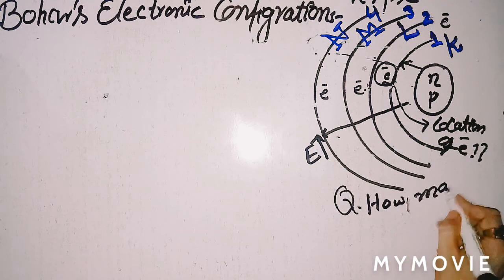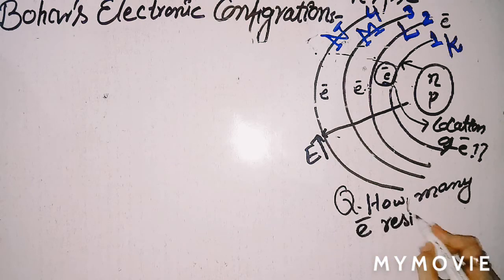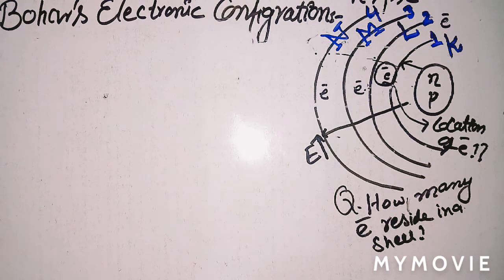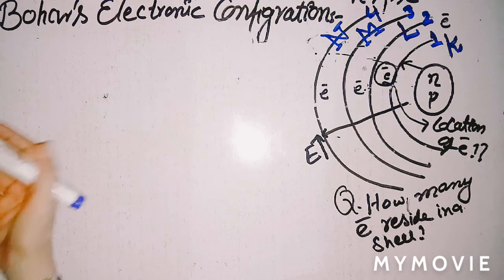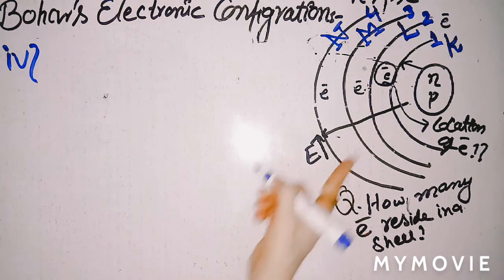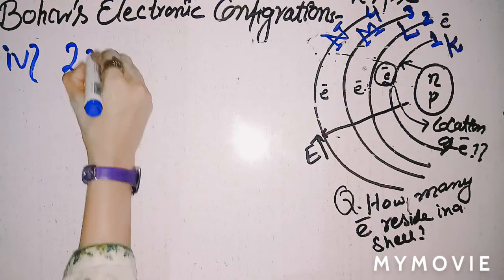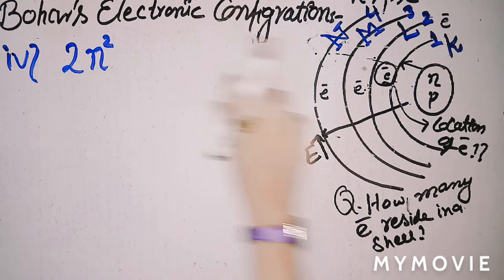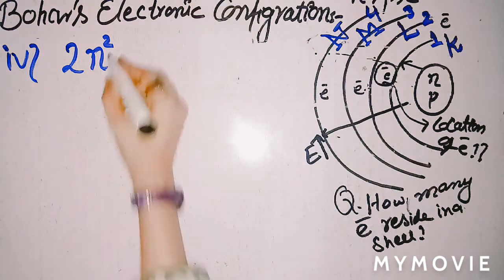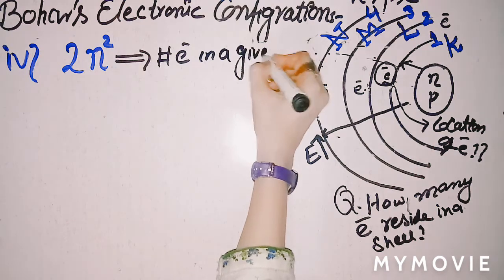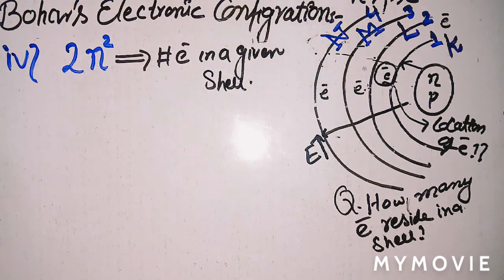Now the question is: how many electrons can reside in a given shell? How many electrons can be accommodated in a given shell? In the fourth postulate, Bohr provides a formula for calculating the number of electrons in a given shell. That formula is equal to 2n², where n is the shell number. Using this formula, you can calculate the number of electrons in any shell.